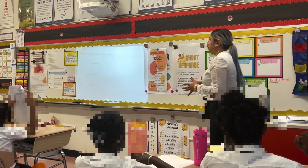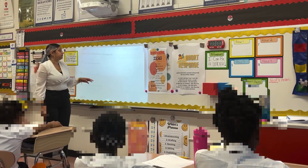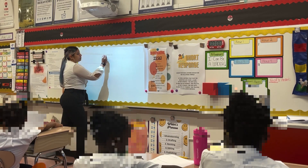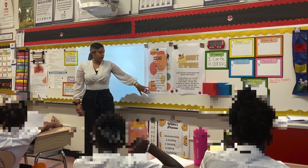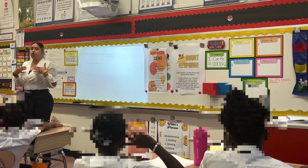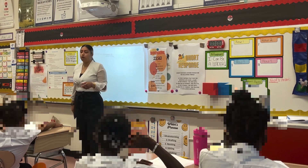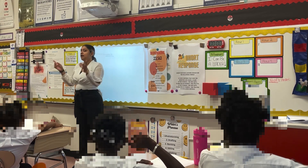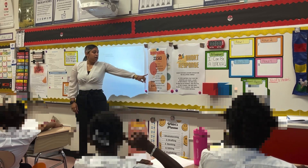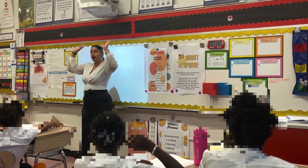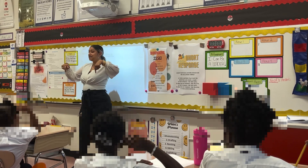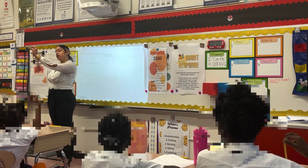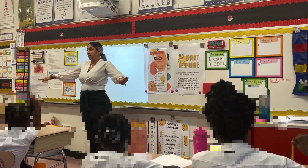We are now going to be rounding two different numbers. The first item, we are rounding these three numbers to the nearest ten. Before we do that, I want us to go over our rounding strategy. Our first step is find the value. Then we're going to look next door. Five or more, we up the score. Four or less, we let it rest. Number to the right, zero is your name. Number to the left, stay the same.